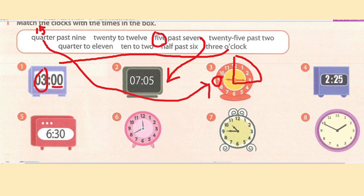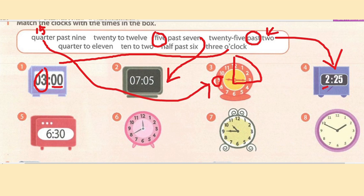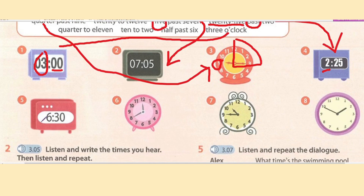Number four: two twenty-five. 'Past' means sudah melalui pukul dua — the hour is two and the minutes involved are 25. So the answer is twenty-five past two. It's easy, but you have to look carefully.